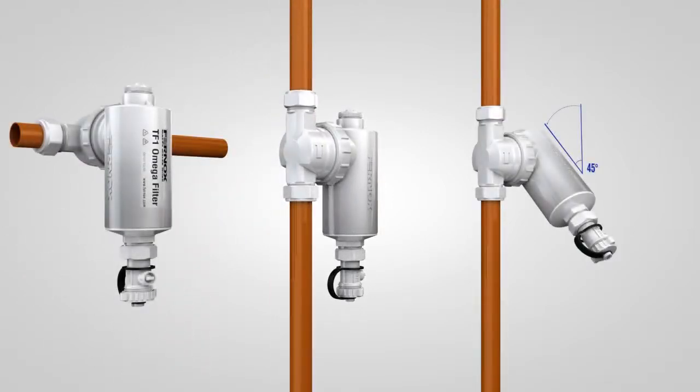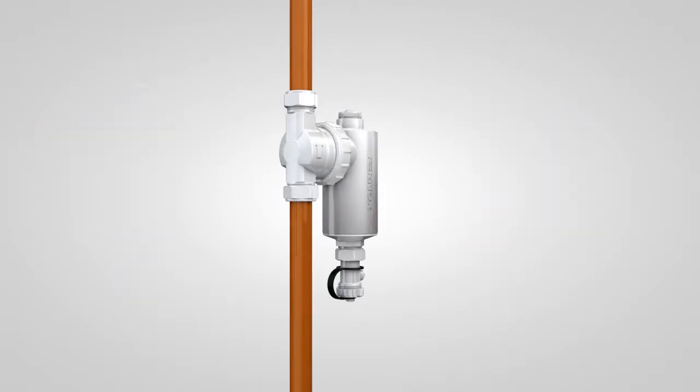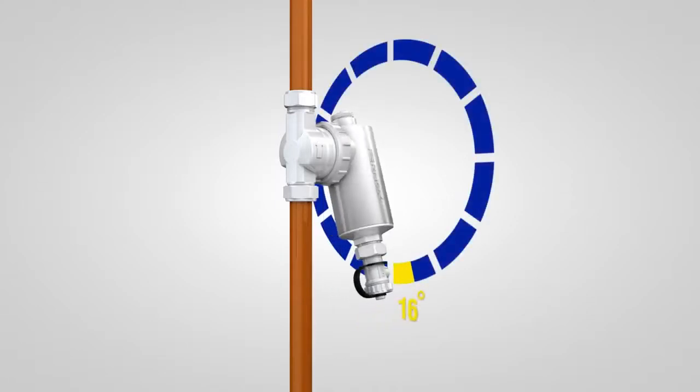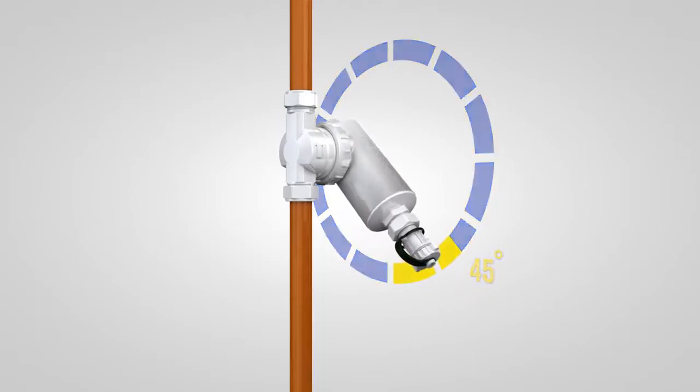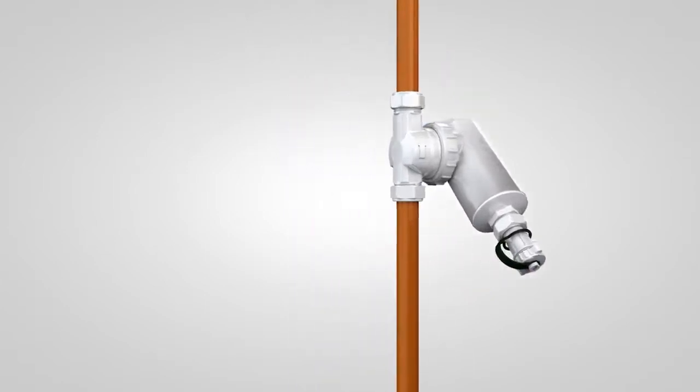The unit can be installed horizontally, vertically, and up to a 45-degree angle if space is restricted. If the orientation of the TF1 Omega filter needs to be changed, simply loosen the ring collar and turn the body of the filter to the required position. Don't forget to re-tighten the ring collar once it's in position.